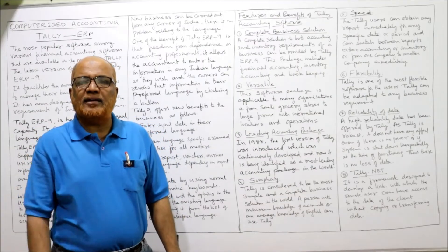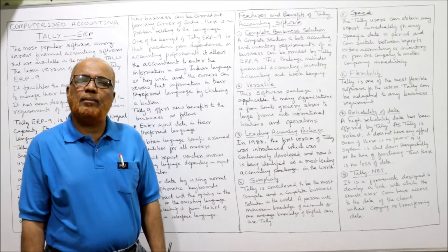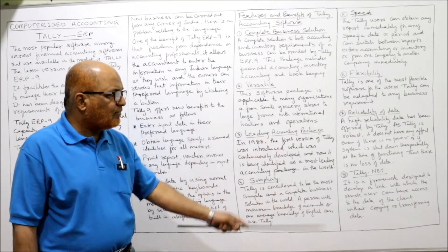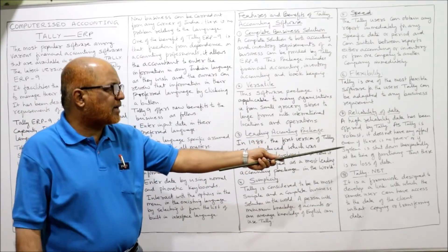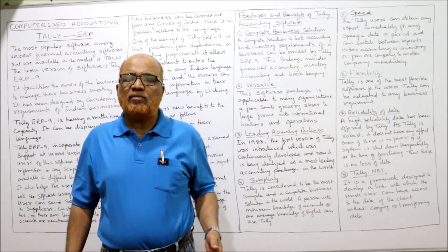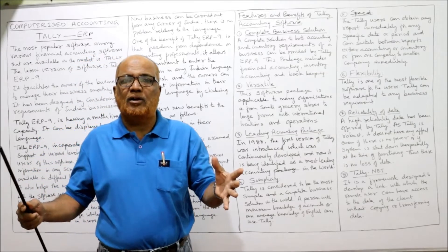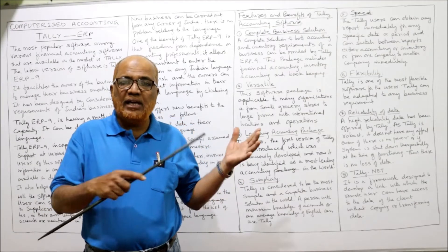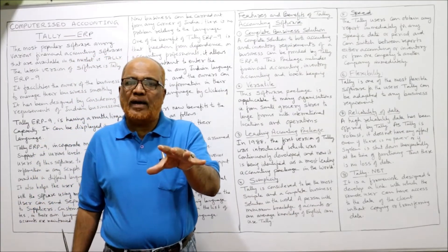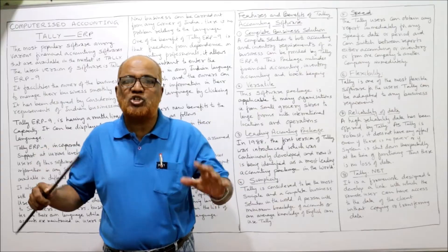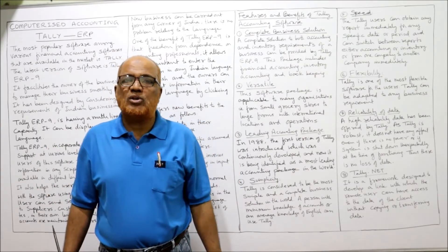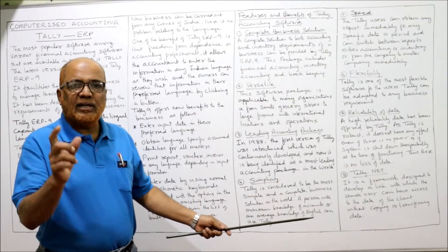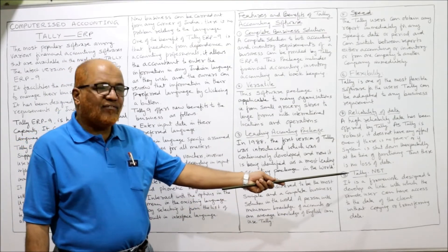Tally also provides high reliability of data. Since Tally is a robust package, there is no loss of data even if there is a power shutdown or the system is switched off unexpectedly. Normally, sudden shutdowns can corrupt or lose data, but in Tally the data is fully protected, which is one of its key advantages.